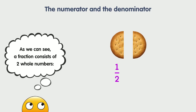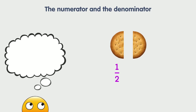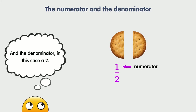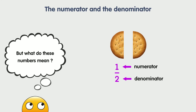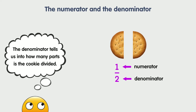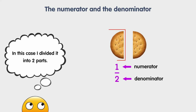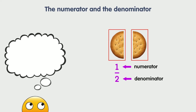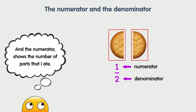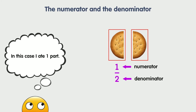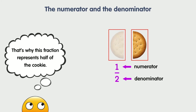As we can see, a fraction consists of two whole numbers: the numerator, in this case a 1, and the denominator, in this case a 2. The denominator tells us into how many parts the cookie is divided — in this case, two parts. And the numerator shows the number of parts that I ate — in this case, one part. That's why this fraction represents half of the cookie.